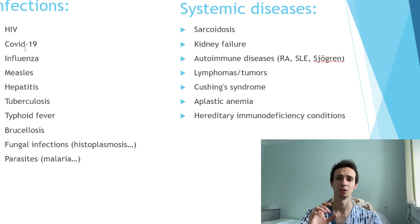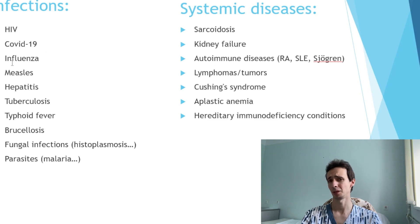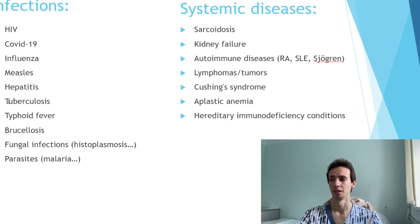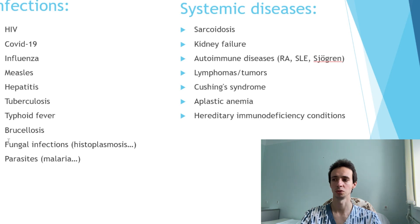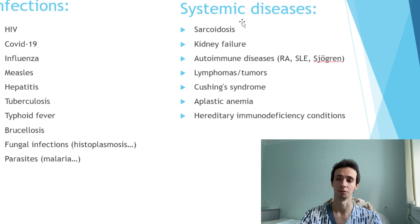Next, COVID-19. SARS-CoV-2 is also an infection that causes low lymphocytes. Some other viruses like influenza, measles, and hepatitis — by the way, they also can cause high lymphocytes. Then bacterial infections like tuberculosis, typhoid fever, brucellosis, and fungi and parasites also can cause low or high lymphocytes. And by the way, these are very common causes of low lymphocytes.